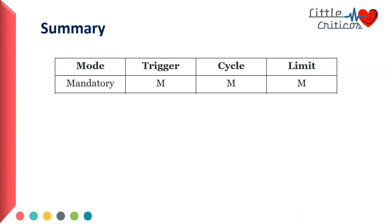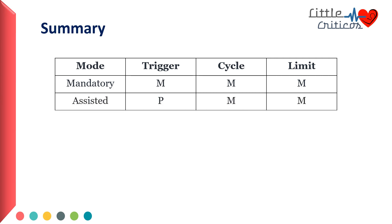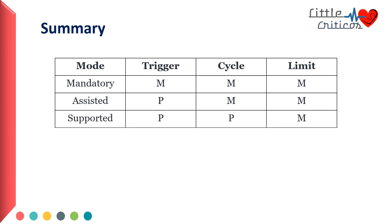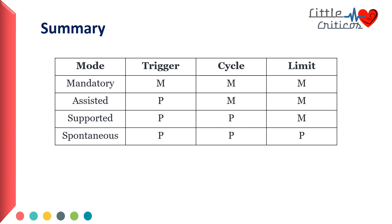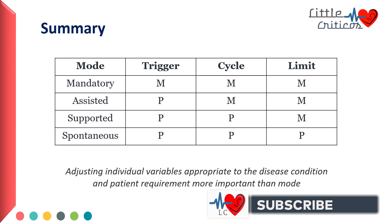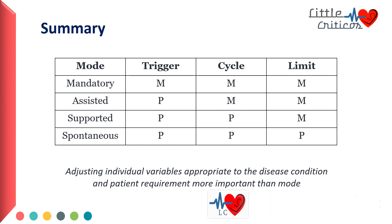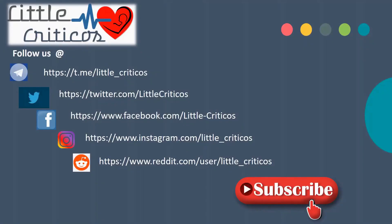In summary, in mandatory mode of ventilation, the trigger, cycle, and limit are controlled by the machine. In assist control, the patient triggers the breath but cycle and limit are controlled by the machine. In supported mode, trigger and cycle are mediated by the patient whereas limit is controlled by the machine. In spontaneous mode, trigger, cycle, and limit are all determined by the patient. It is important to note that adjusting individual variables appropriate to the disease condition and patient requirement is more important than the mode per se.